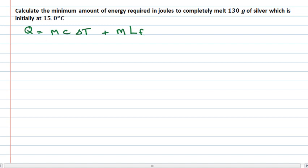So the total Q here is the total amount of energy required to first raise the temperature — that's the left-hand side — and then to melt the object and change its phase — that's the right-hand side. We can see that mass is a common factor, so we can take it out and write Q = m times (c·ΔT + Lf), where delta T is T final minus T initial.